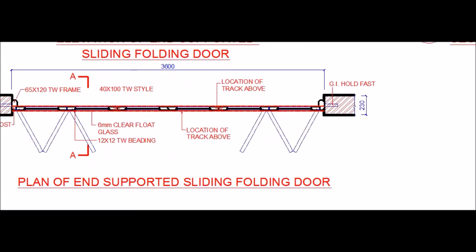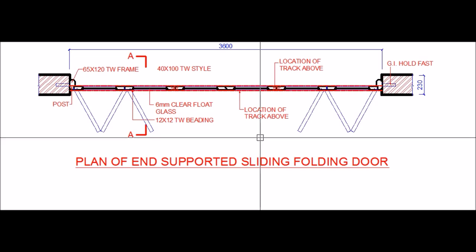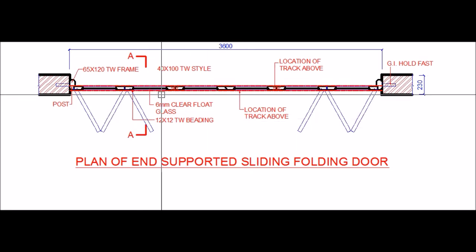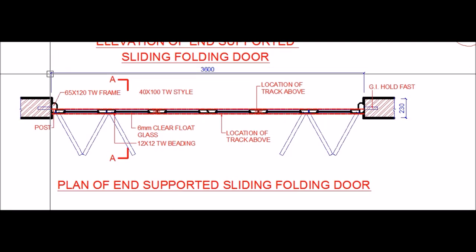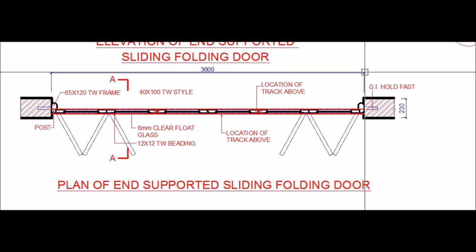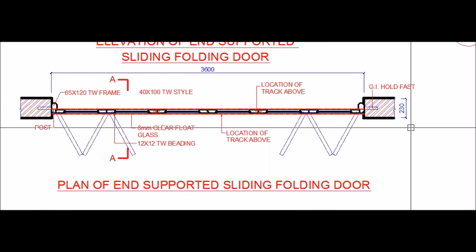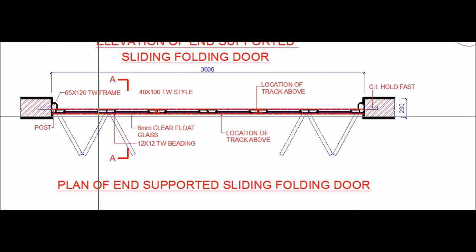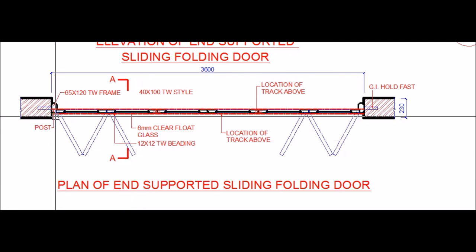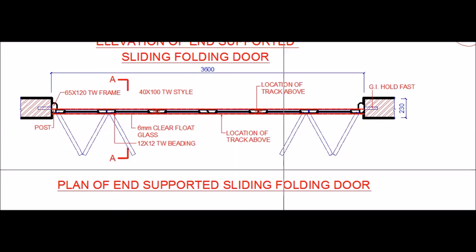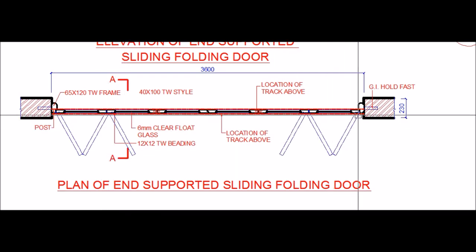Let us zoom into the plan and see what is the sliding folding door. The total width of this door is 3.6 meters, and it has a frame on two sides which is fixed into the wall. The total door of 3.6 meters has been divided into six equal shutters — one, two, three, four, five, and six — and in the folded position you can see how the shutters are going to fold, as shown in the dashed lines.